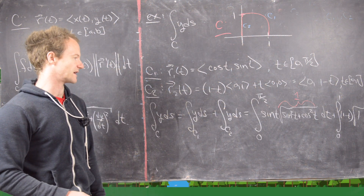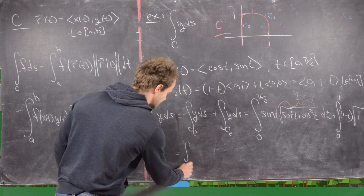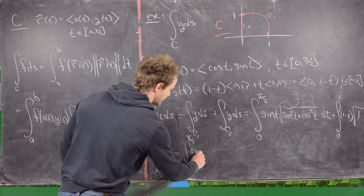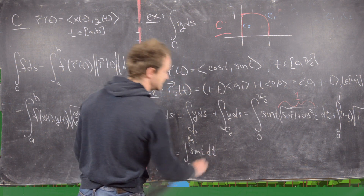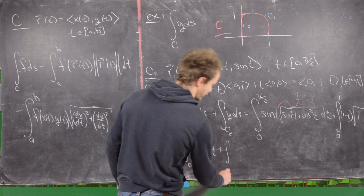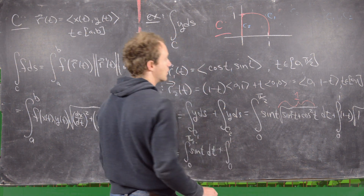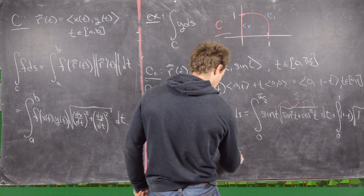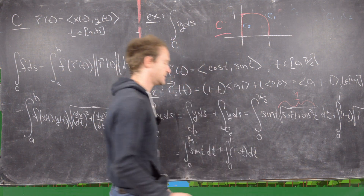For C2, that's the integral from 0 to 1 of (1−t) times the square root of 0² + (−1)² dt, which simplifies to just (1−t) dt. So we have the integral from 0 to π/2 of sin(t) dt plus the integral from 0 to 1 of (1−t) dt.